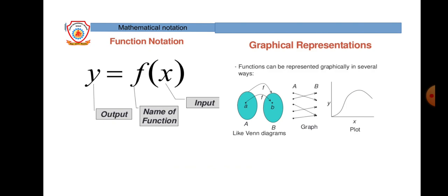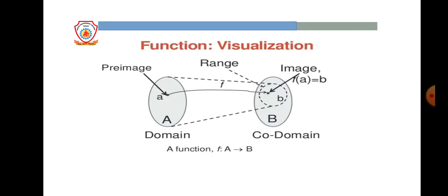In discrete mathematics, we can represent the function by a Venn diagram or elliptical form. All elements of set A are placed in the first ellipse, the elements of the second set are placed in the second ellipse, and the mapping is shown by arrows. You can also represent the function by a graph or a plot.